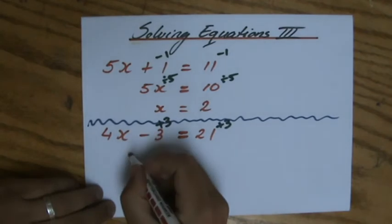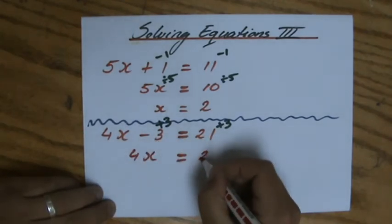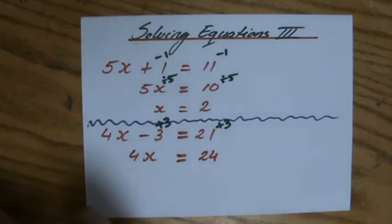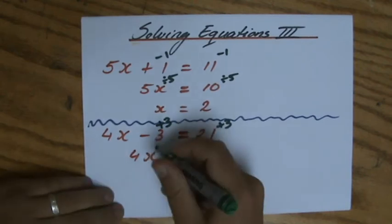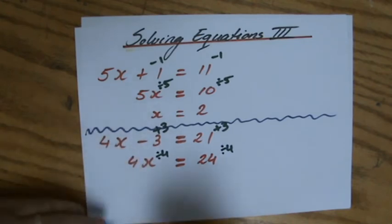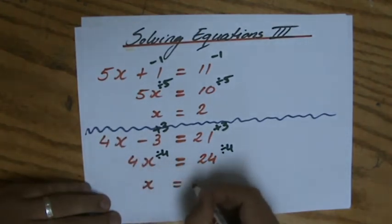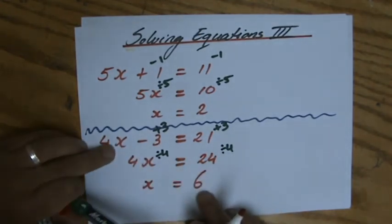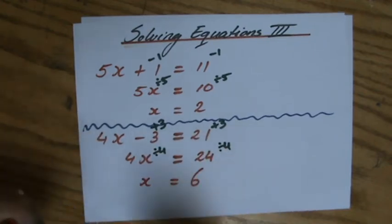So plus 3, so 4x equals 24. All right, and then to get rid of that 4 here, I do the opposite operation, divide by 4. So 24 divide by 4 is 6. 4 times 6 is 24 minus 3 is 21. Fantastic.